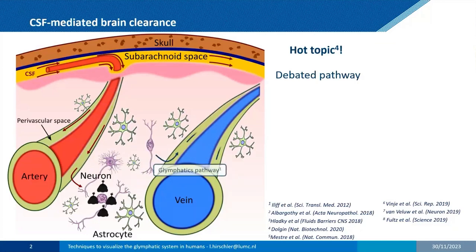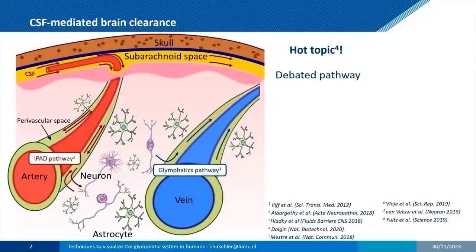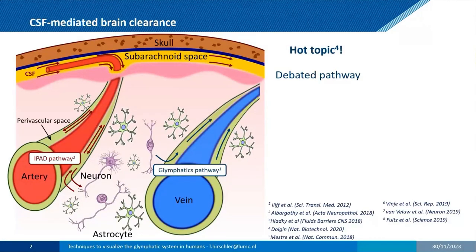From there it enters brain tissue, and there are two debated pathways: a lymphatic pathway where waste has been suggested to be cleared along the perivenous spaces, and another pathway — intramural periarterial drainage — clearing between the smooth muscle cells of the arteries. These mechanisms have never really been directly measured in vivo; the intramural pathway largely relies on ex vivo measurements.